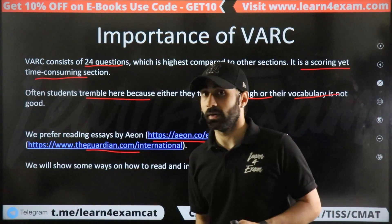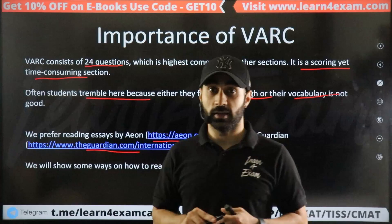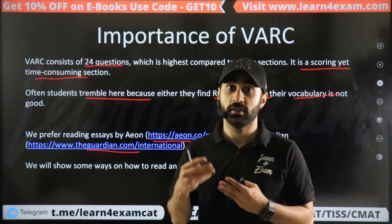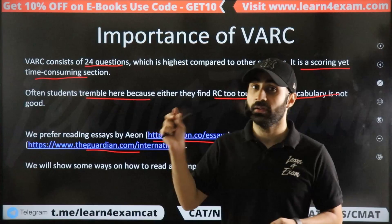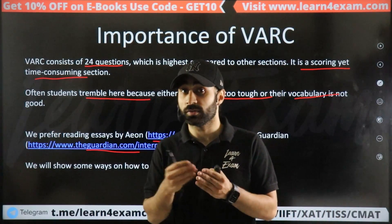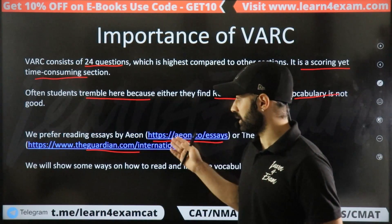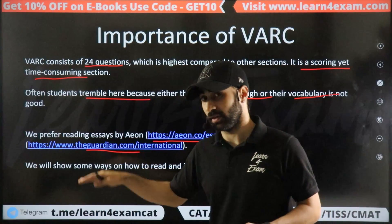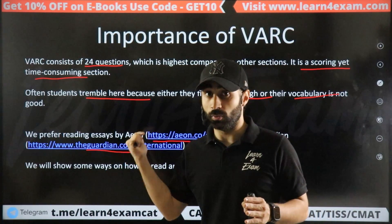You will find articles from Aeon and The Guardian. Most of the articles that appear in the CAT exam come from these two sources only.